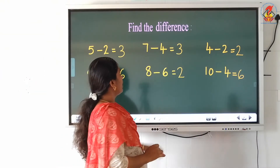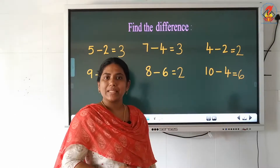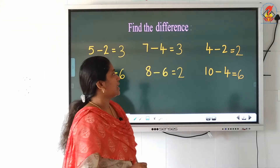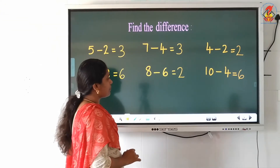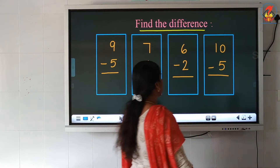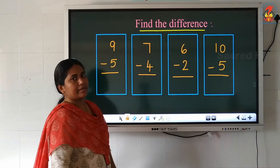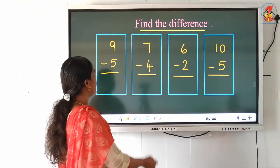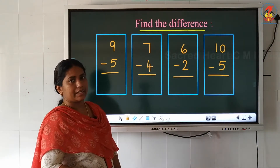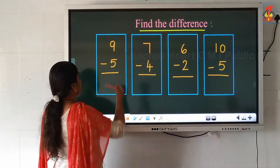Now these were all horizontal questions. Now we will do some vertical questions. Look children — find the difference. But all these questions are in vertical type. Look at the first question.